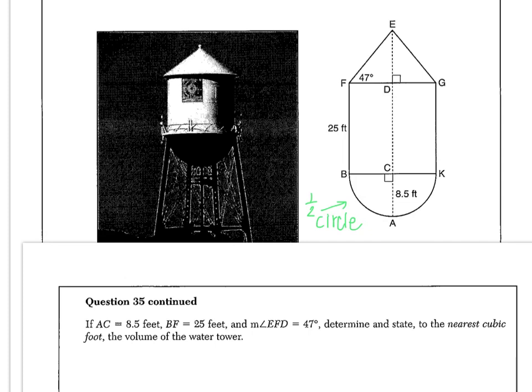So it says if AC is 8.5 feet, that looks like maybe the radius of this hemisphere or half circle. BF is 25 feet, already labeled. And measure of angle EFD is 47 degrees. Determine and state to the nearest cubic foot the volume of the water tower.